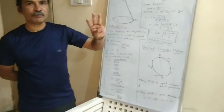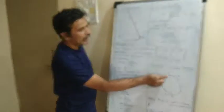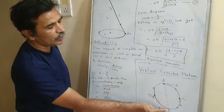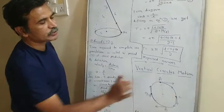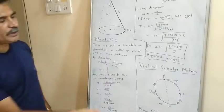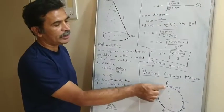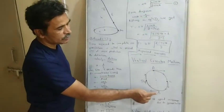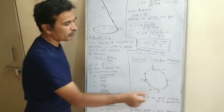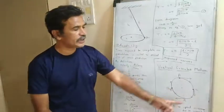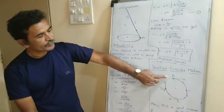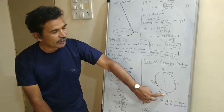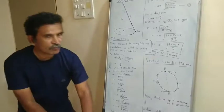Three points are important here: point A is called the upper (topmost) point, point B is called the lower (bottom) point, and point C is called the middle point. In examinations, questions may ask to obtain the expression for tension at the highest point, tension at the lowest point, or the difference in tension at the highest and lowest points of VCM.